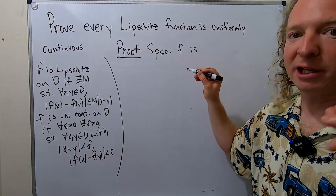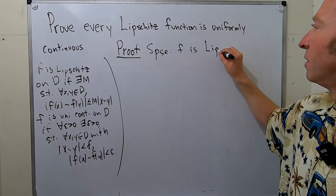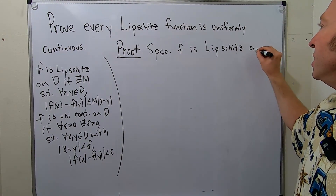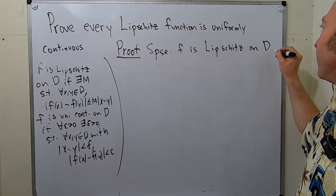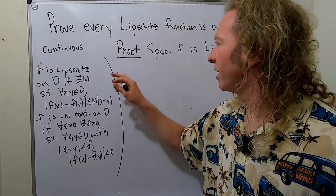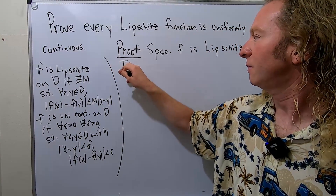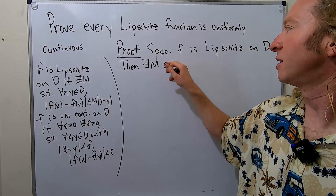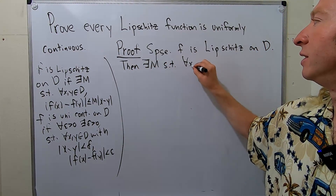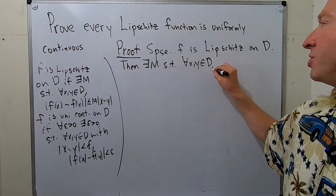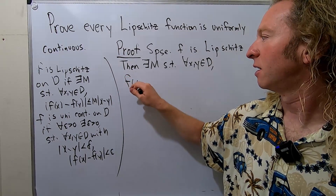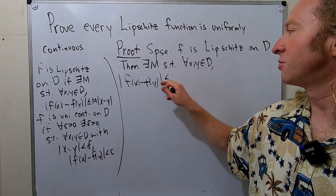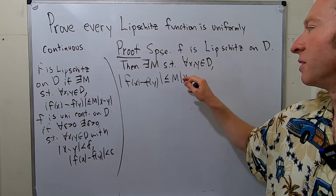Suppose F is Lipschitz on D, which is a subset of R^n. So then that means there exists a constant M such that for all x, y in D, we have the Lipschitz condition: |f(x) - f(y)| is less than or equal to M|x - y|.